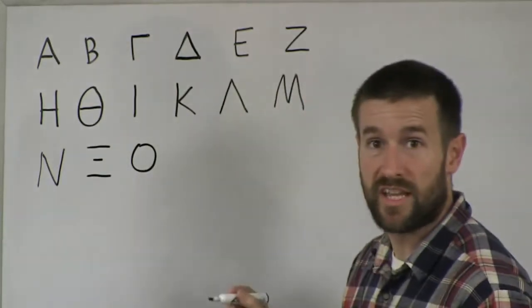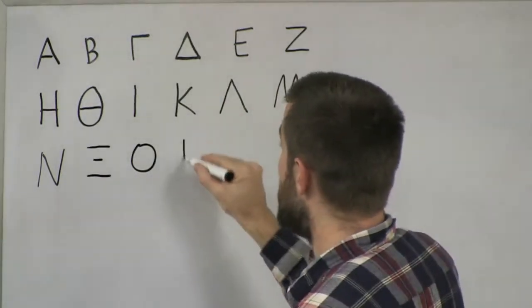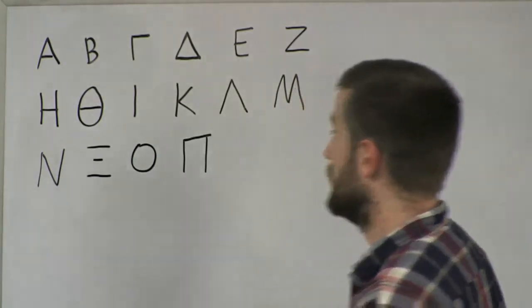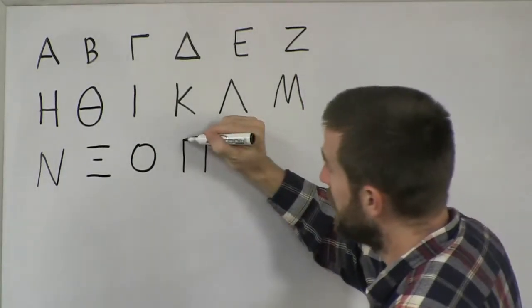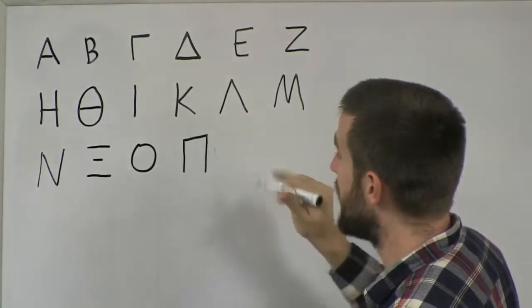Omicron looks just like an English capital O. Pi. Okay, just like that. And then after Pi, we've got, of course, Rho.